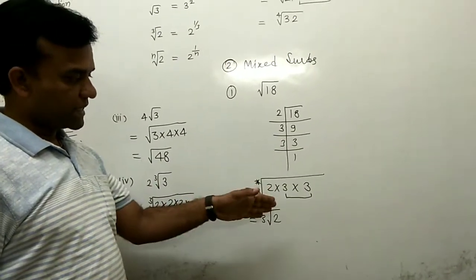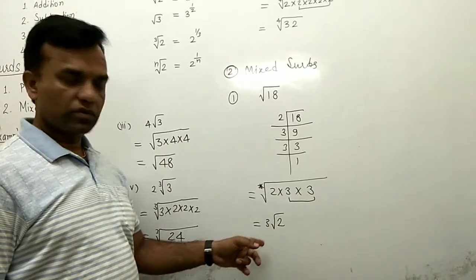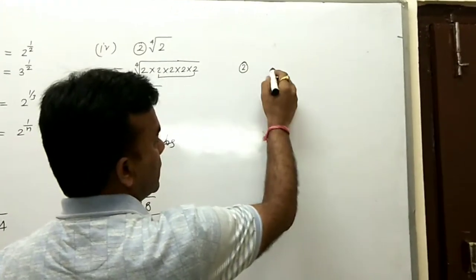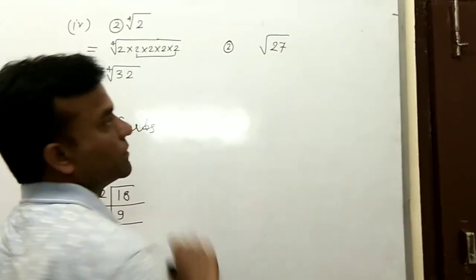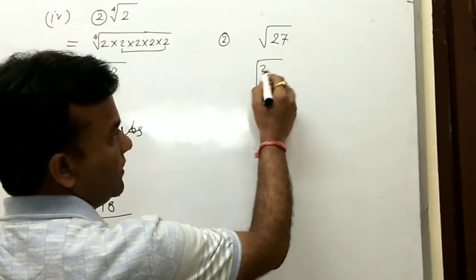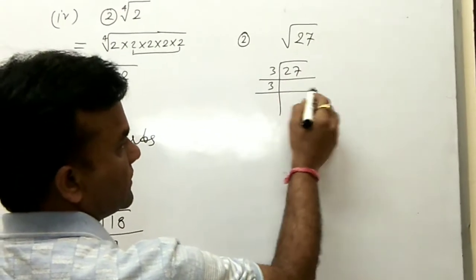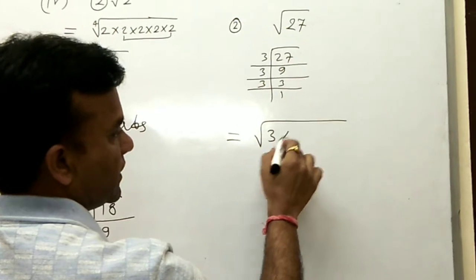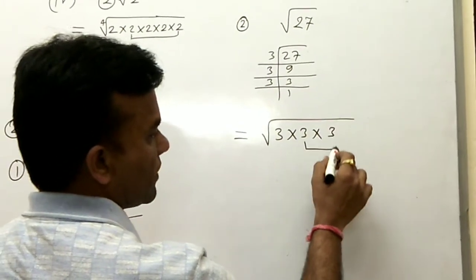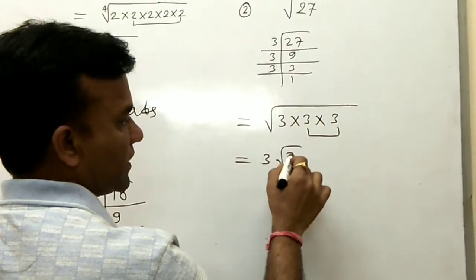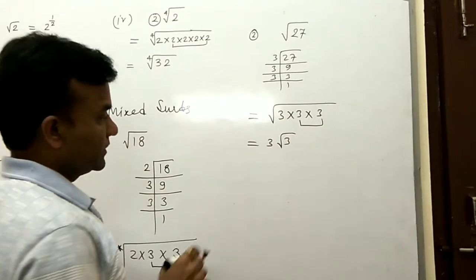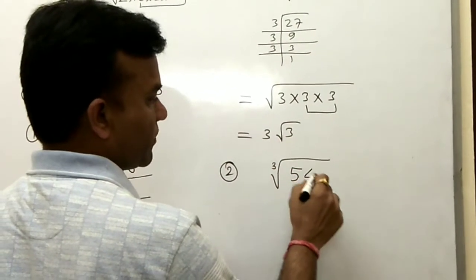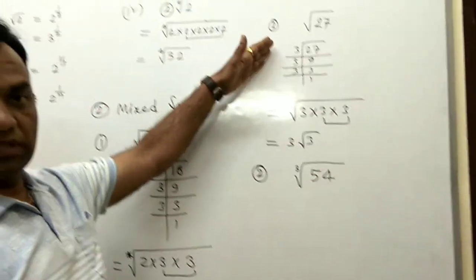Similarly, we have another example: root 27. Find the prime factors of 27: 27 = 3 × 3 × 3. Write all factors inside: 3 × 3 × 3. Since power is 2, look for a pair of 3s — one pair comes outside, and one 3 remains inside. So root 27 = 3 root 3. Now we have another case where the power is 3 (cube root) and the number inside is 54.